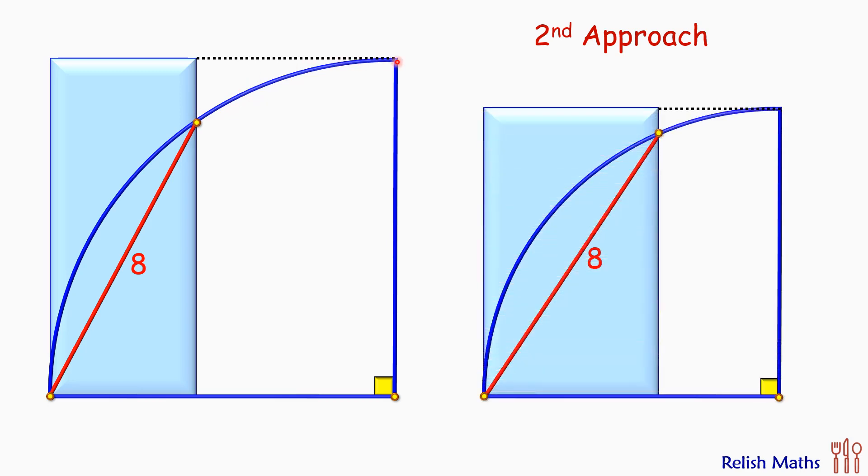In this second figure, if we'll see, the radius of quadrant is smaller, the rectangle is little broader, but as long as we are maintaining this length of chord as 8 centimeters, we are fulfilling all the conditions of the question, and thus area of rectangle will remain same. Otherwise the question will become invalid.